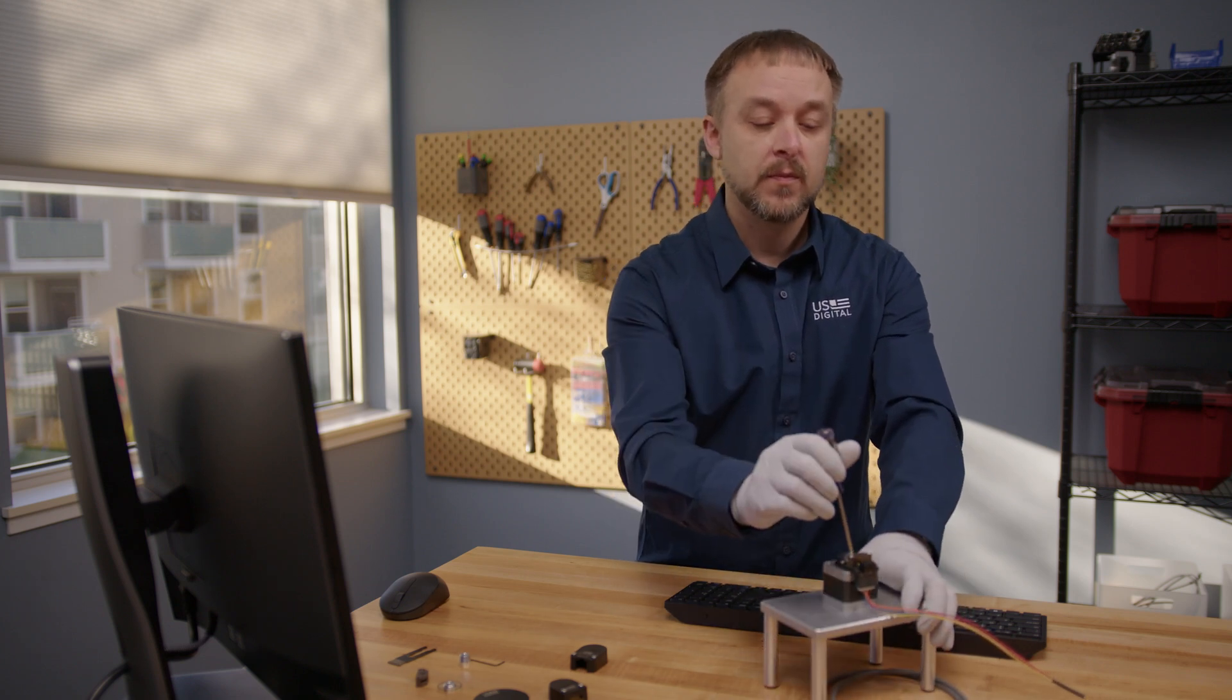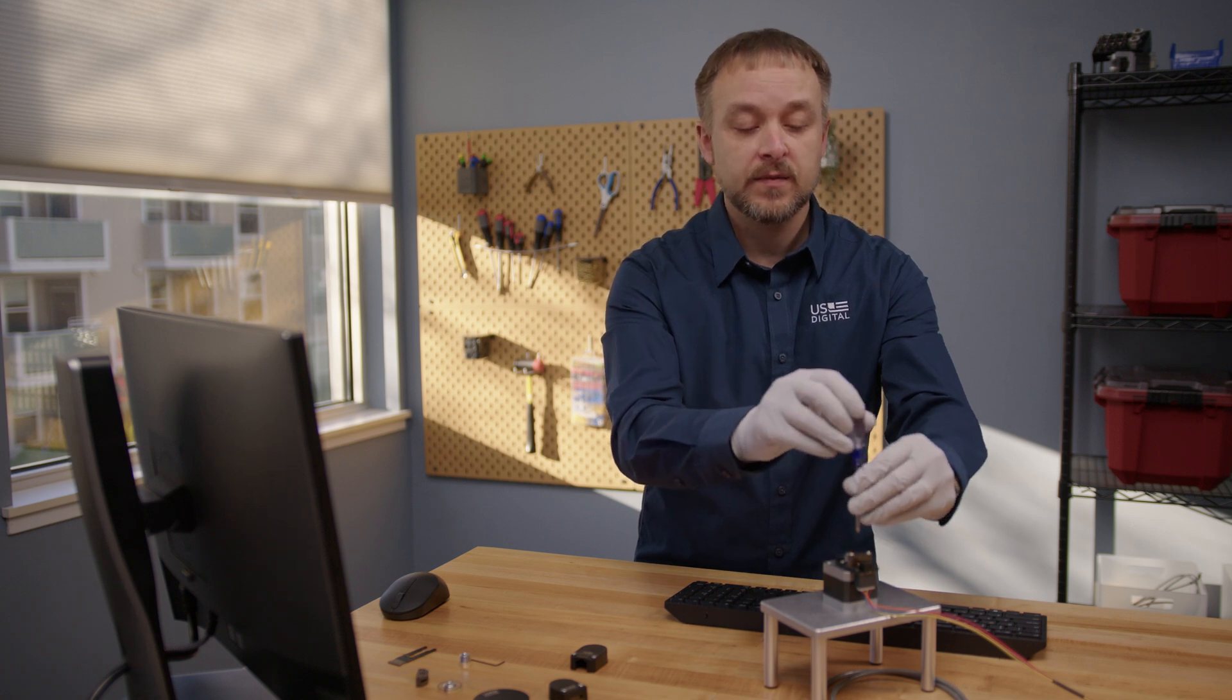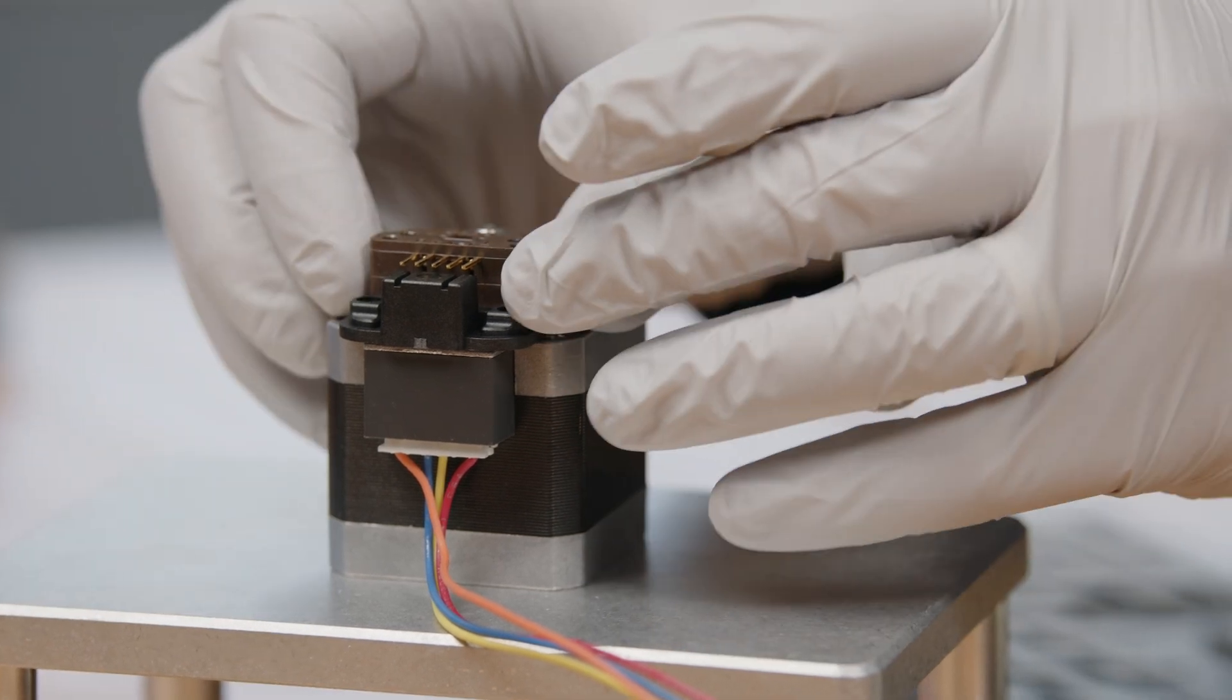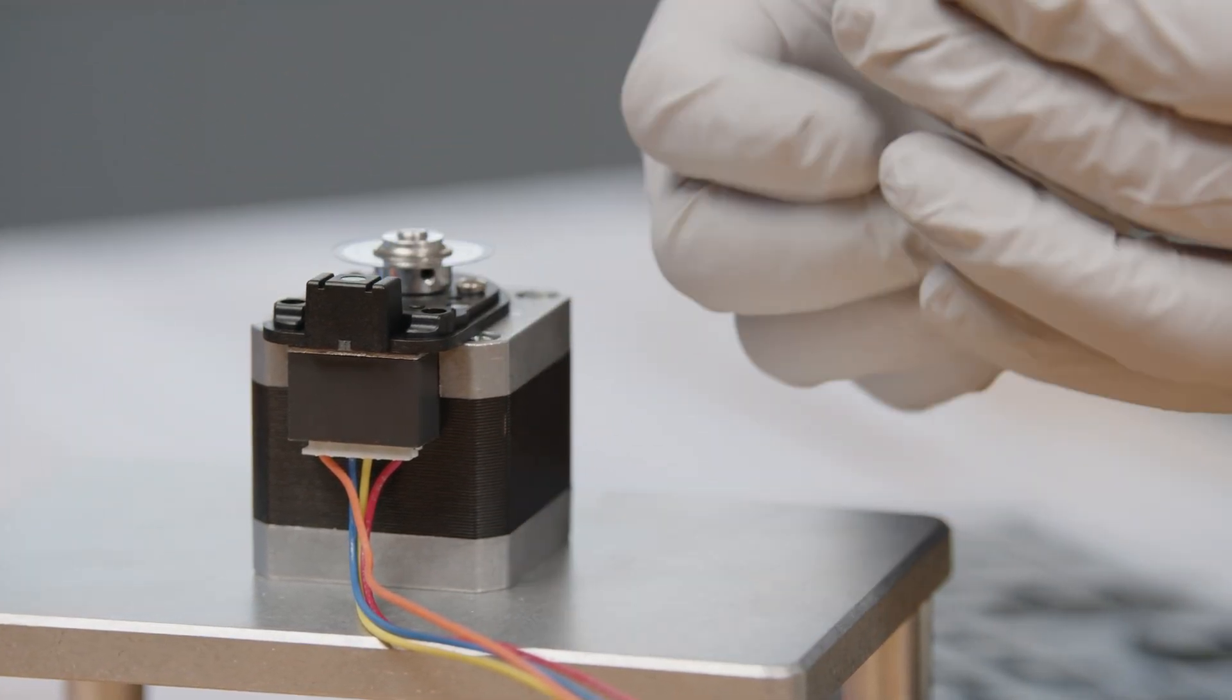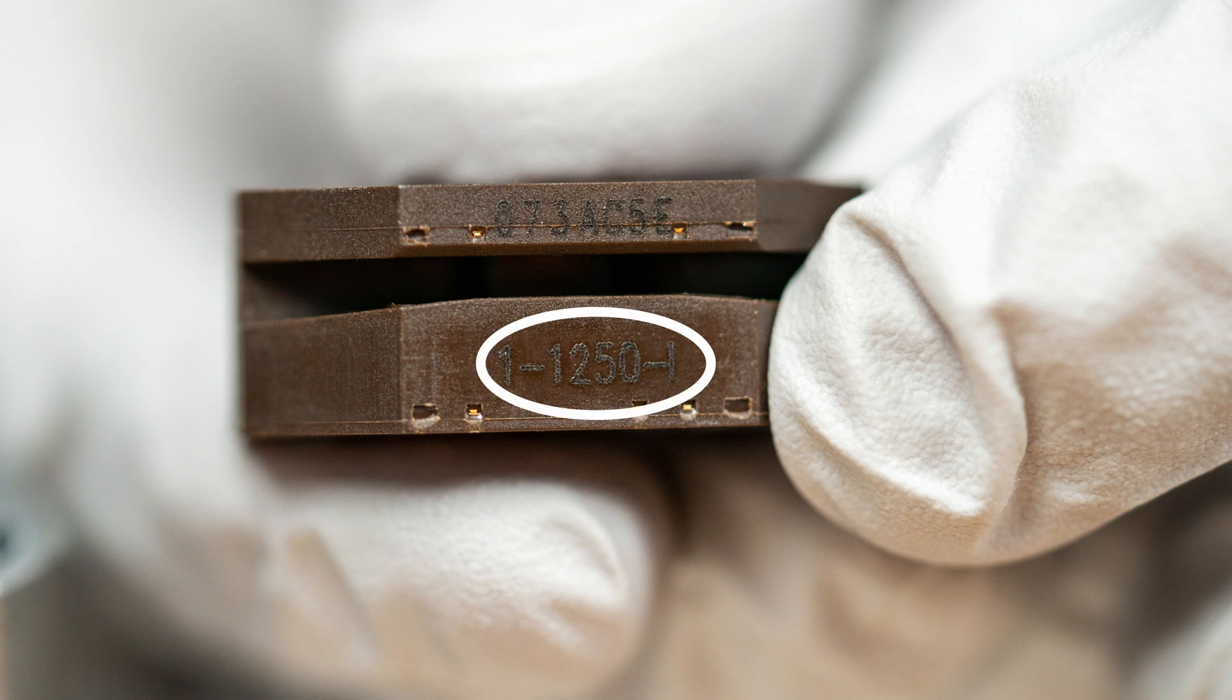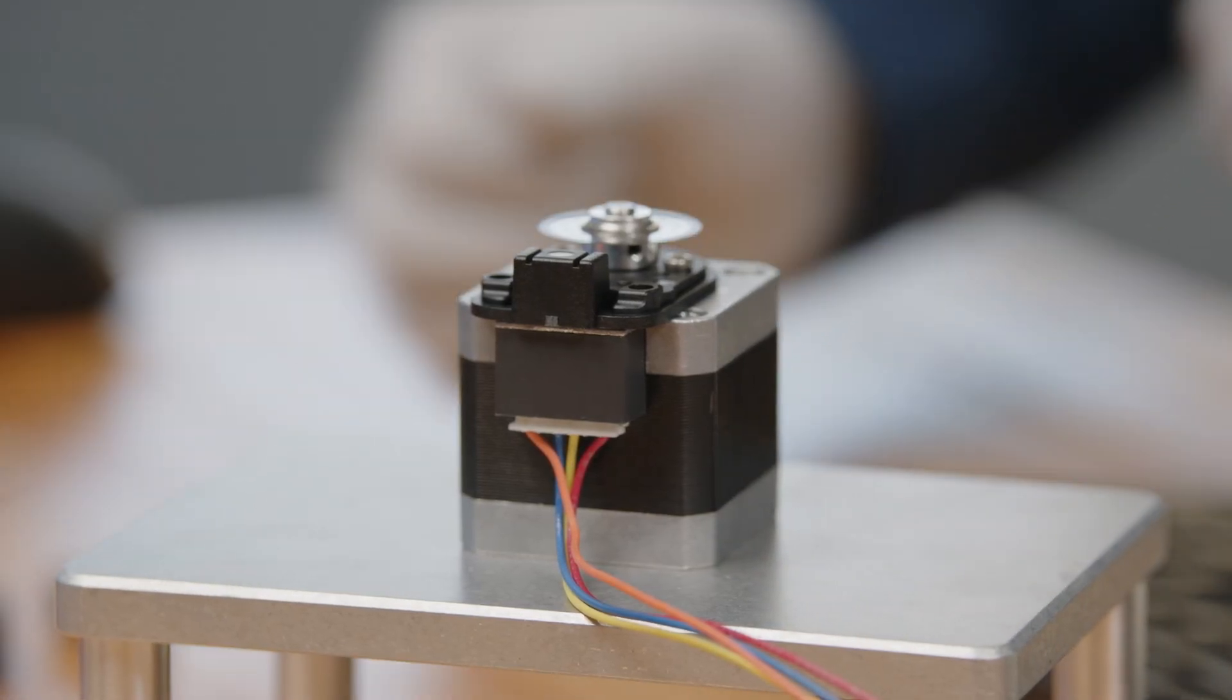So let's look at the module. The module has a part number printed on the front face. On the bottom half, you'll see that it is a 1-1250-I here on the part number. The 1 is for the 1-inch disk, which is what we're using, and the 1250 is the CPR. I indicates index. Looks like this disk and module do match, so let's move on to the next step.